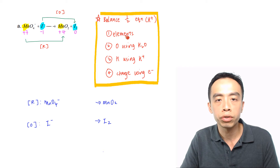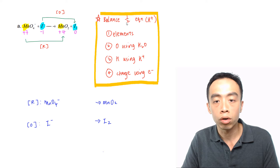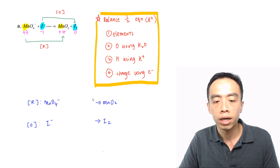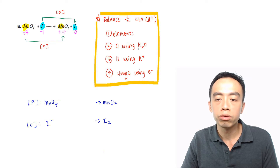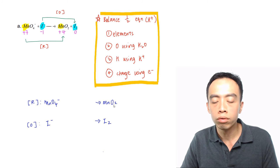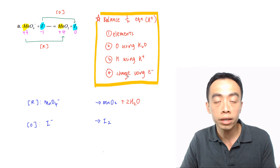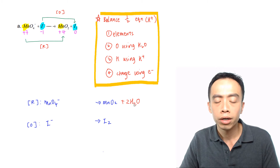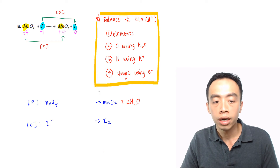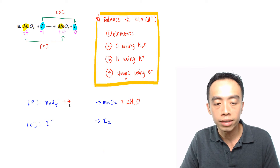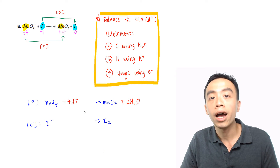Looking at the reduction half equation, the first step is to balance elements. Mn is 1 on the left-hand side and 1 on the right-hand side, so Mn is balanced. Second step is oxygen using water: left-hand side has 4 oxygen, right-hand side has 2, so I need 2 more oxygen — I add 2 water on the right-hand side. Then I balance hydrogen using H+: the right-hand side now has 4 hydrogen, so I need 4 H+ on the left-hand side.